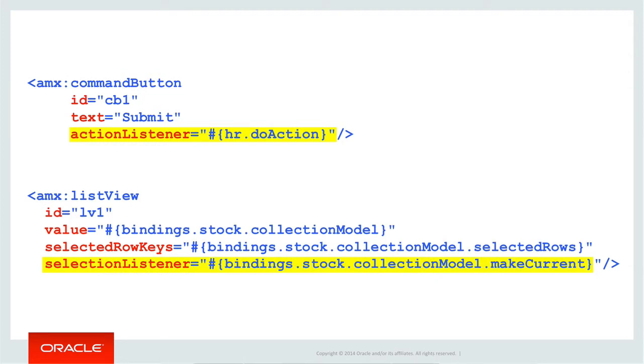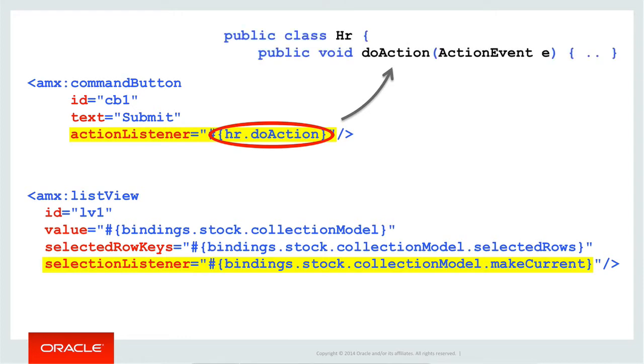It's likely not too hard to guess that listeners in MAF give you the ability to hook in a piece of code to fire, say when the AMX command button is pressed. Yet let's take a few steps back to understand the broader concepts of listeners and where they come from. MAF is broadly based on Java Server Faces, which in turn was based on Java Enterprise Edition, or J2EE as it used to be known, and all of this runs on top of Java under the covers.